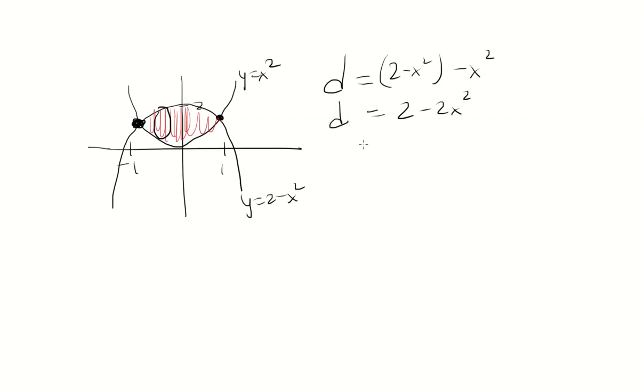But we know for the area of a circle we need pi r squared. So the radius will be half of the diameter. So you just divide everything by 2 to get 1 minus x squared.